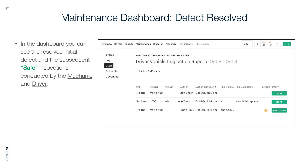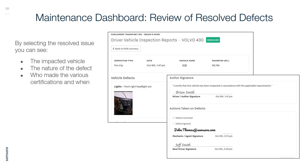Maintenance Dashboard — Defect Resolved: In the dashboard you can see the resolved initial defect and the subsequent safe inspections conducted by the mechanic and driver. By selecting the resolved issue, you can see the impacted vehicle, the nature of the defect, and who made the various certifications and when.